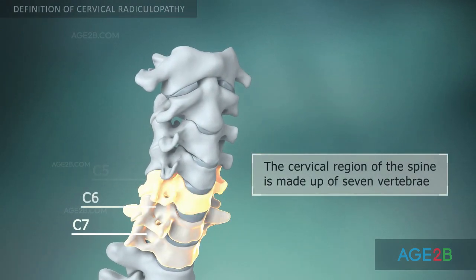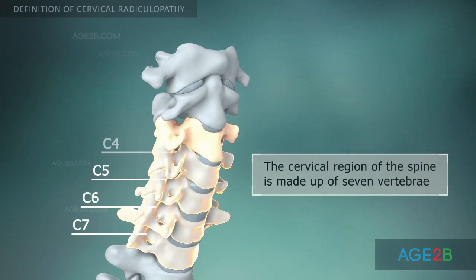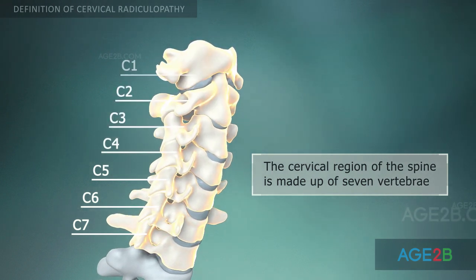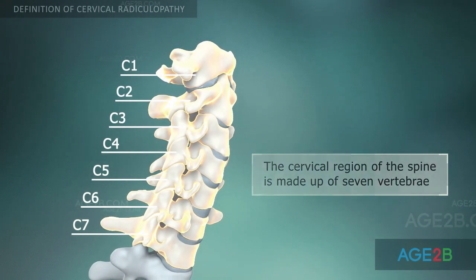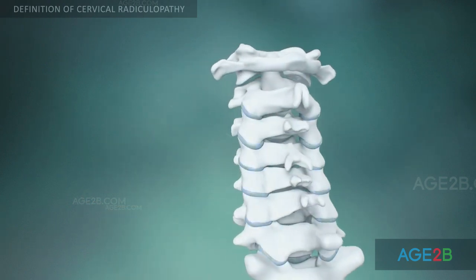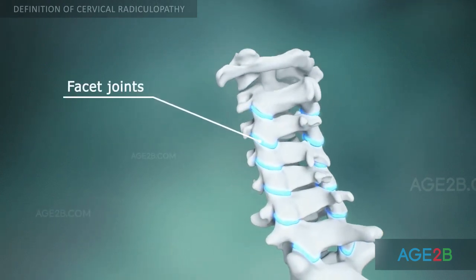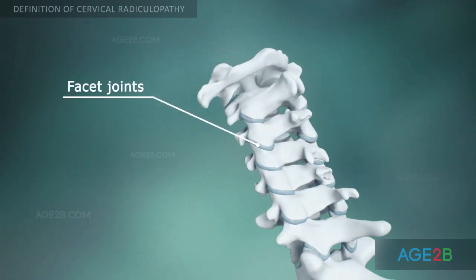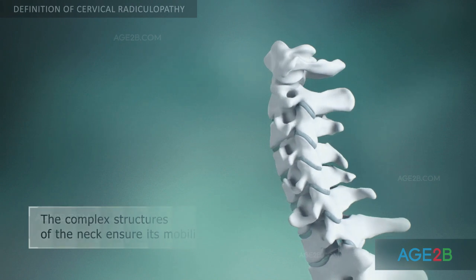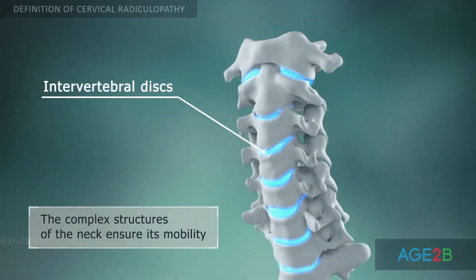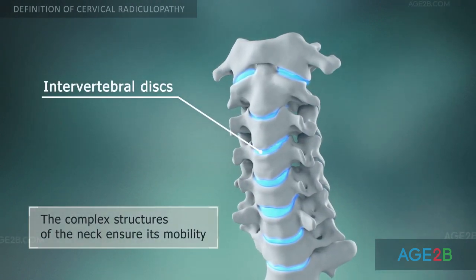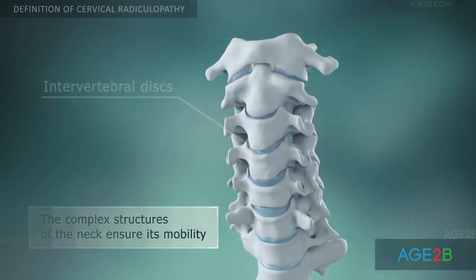The cervical region of the spine is made up of seven vertebrae, which are designated as C1 through C7. The cervical region of the spine is very mobile. Its mobility is ensured by the facet joints, the intervertebral discs, and the spinal ligaments.